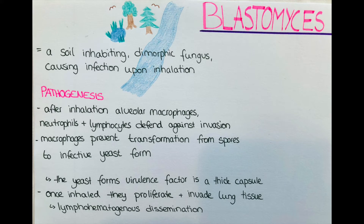The yeast form's virulence factor is a thick capsule which protects it from being phagocytosed. Once they are inhaled, they proliferate and invade further lung tissues. As the pathogen reproduces, the infection spreads by lymphohematogenous dissemination.